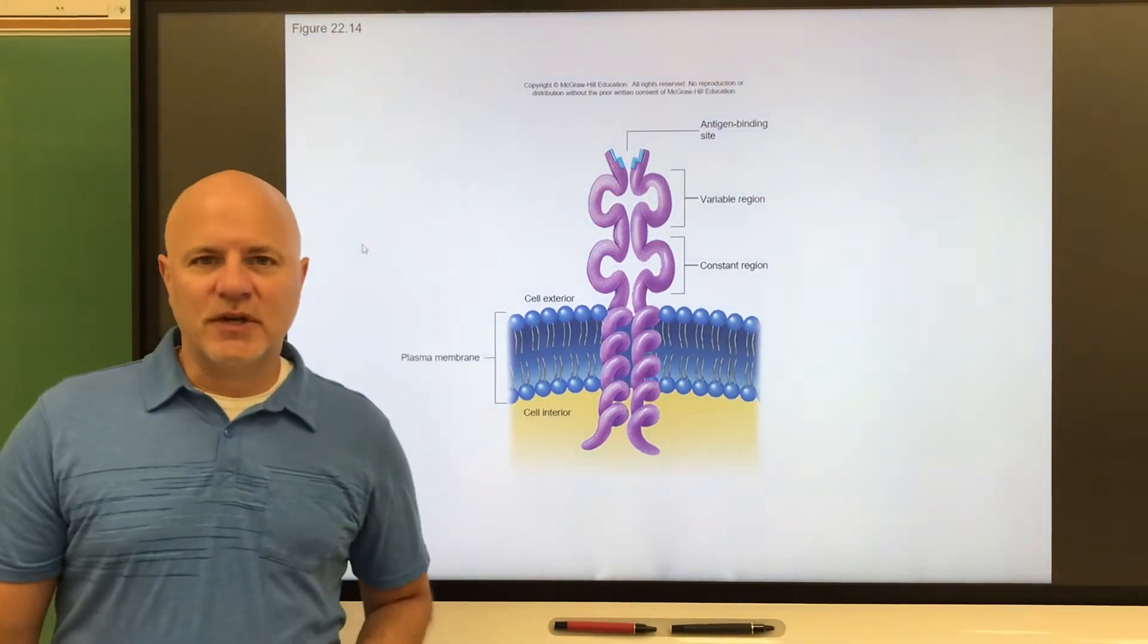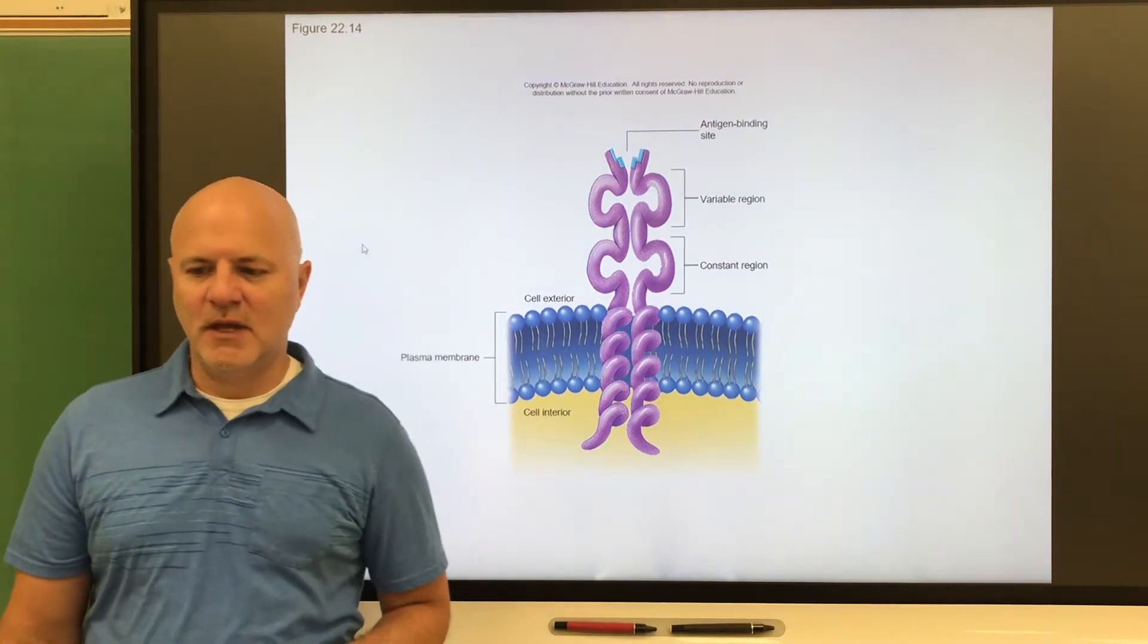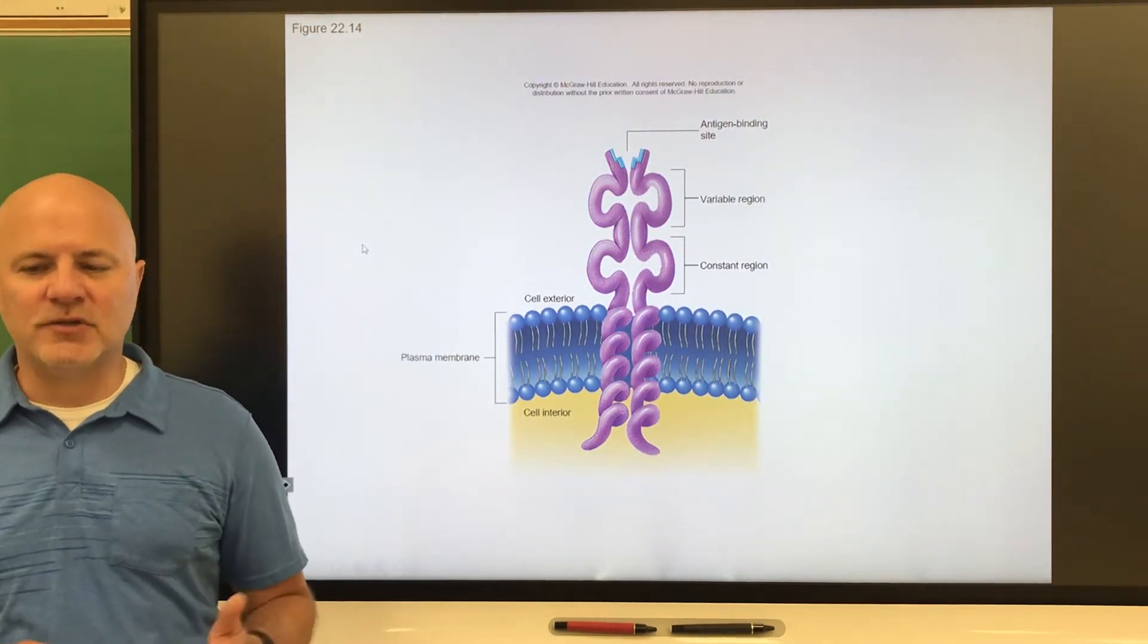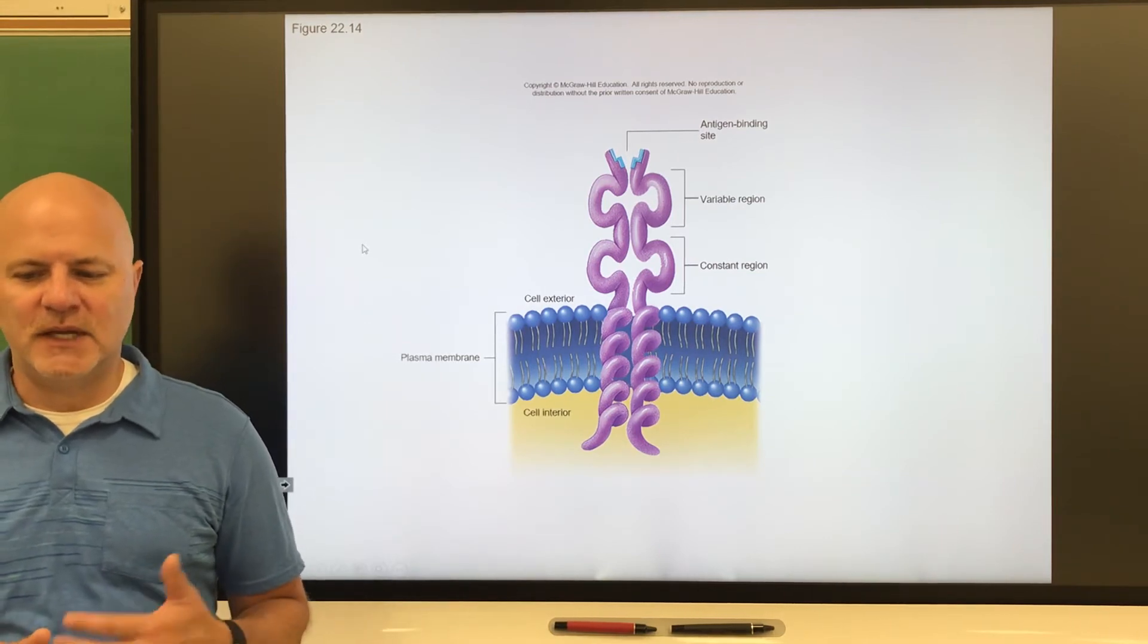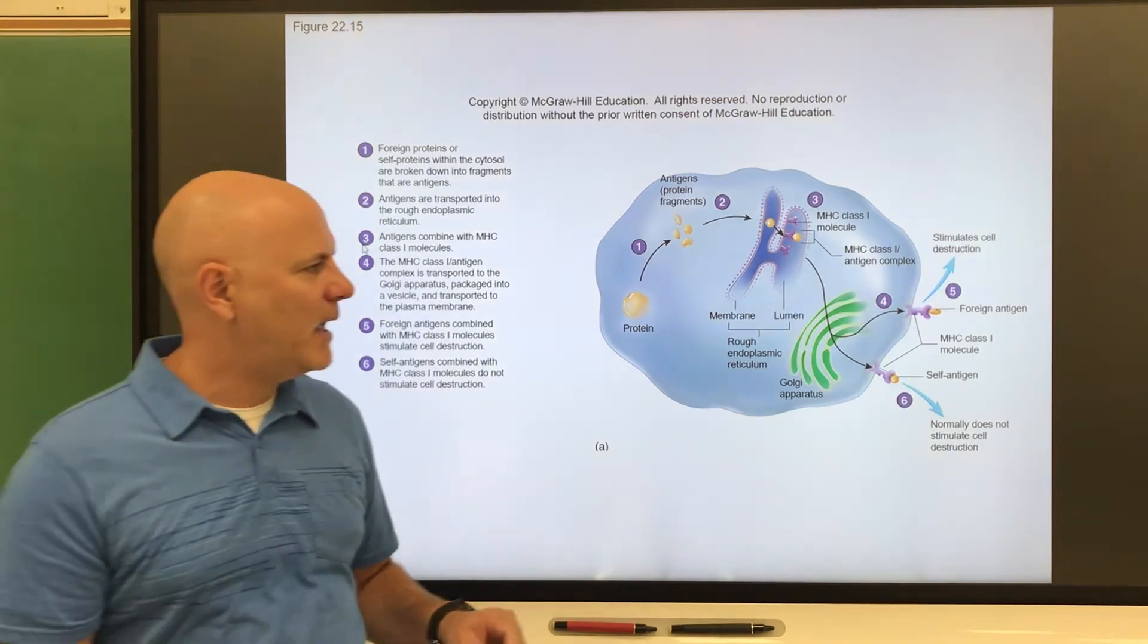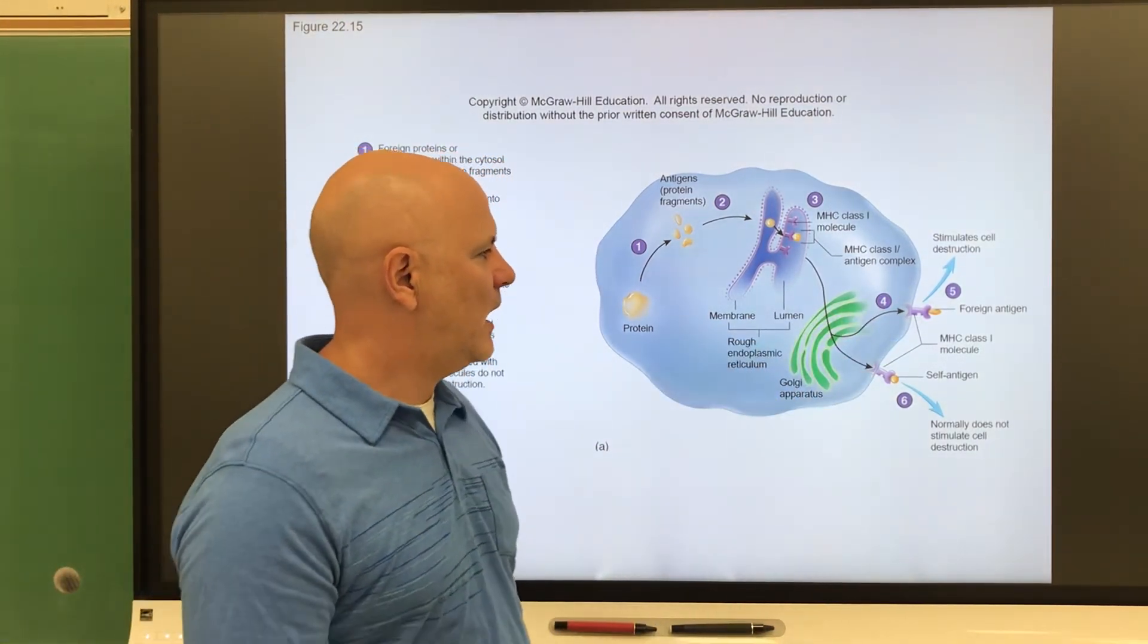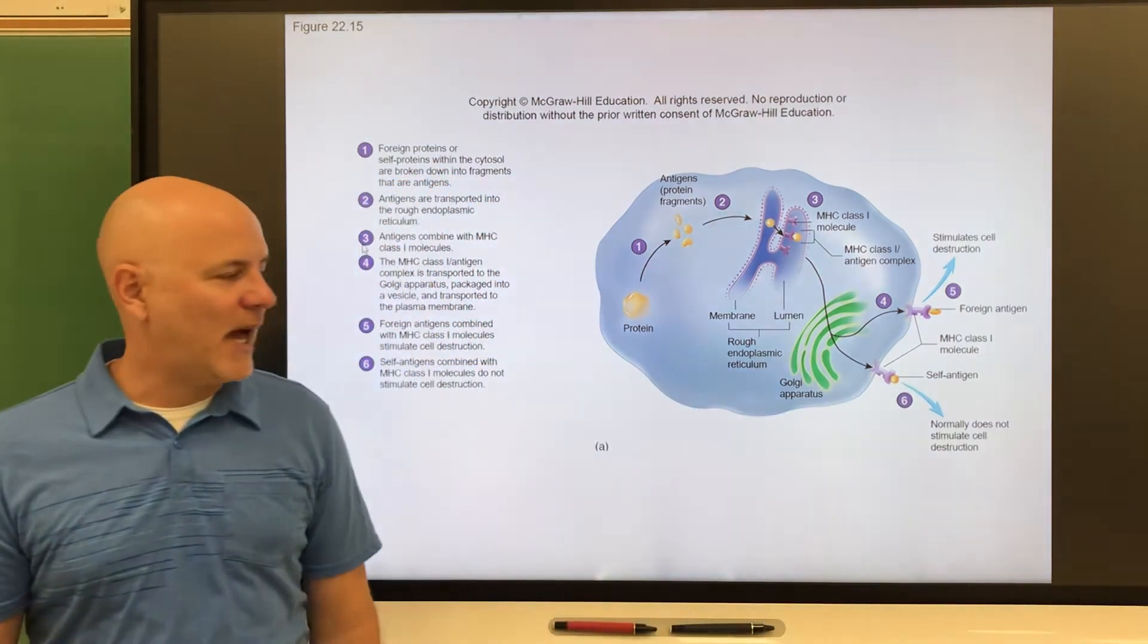Next are major histocompatibility complex proteins or MHC proteins. These are self-antigens, antigens on our cell surfaces. They are strongly antigenic to others. We have two different types here. This is showing the MHC class one molecule.